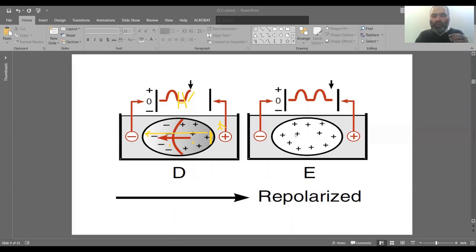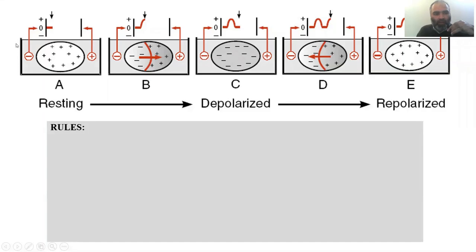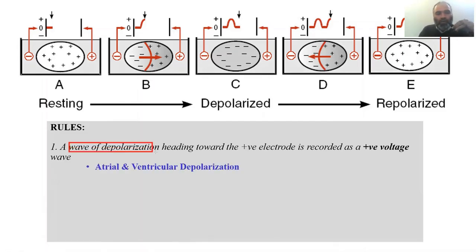When the whole tissue becomes positive, the dipole ceases to exist and the curve comes back down to zero. This is how repolarization is accomplished. Now let's derive some rules. If a wave of depolarization heads toward a positive electrode, it is recorded as a positive voltage - that was the wave we discussed.